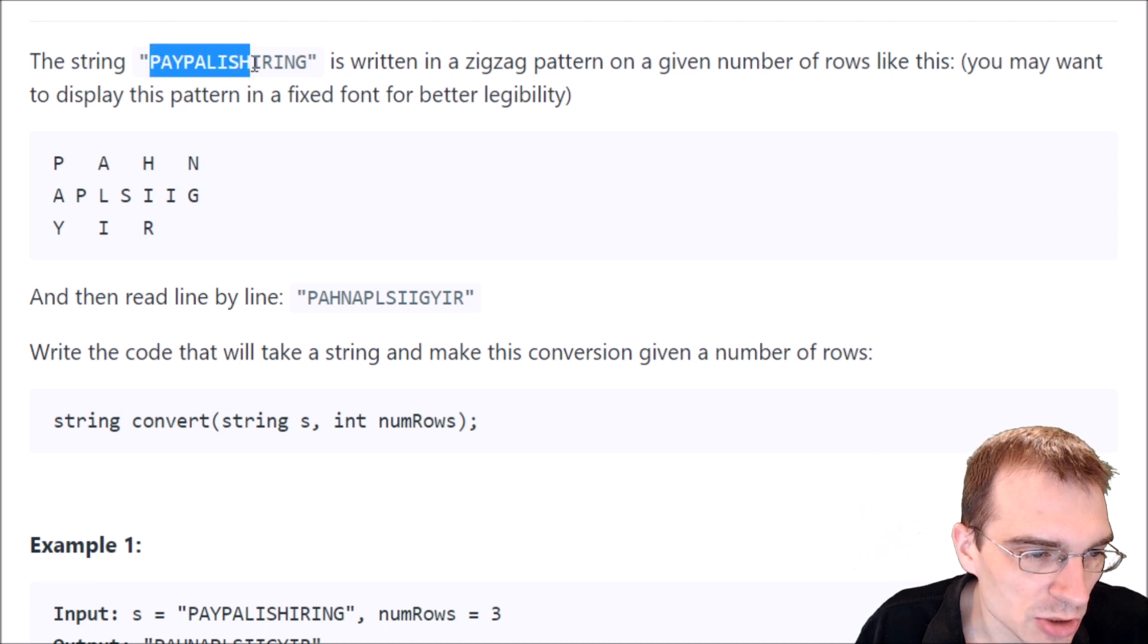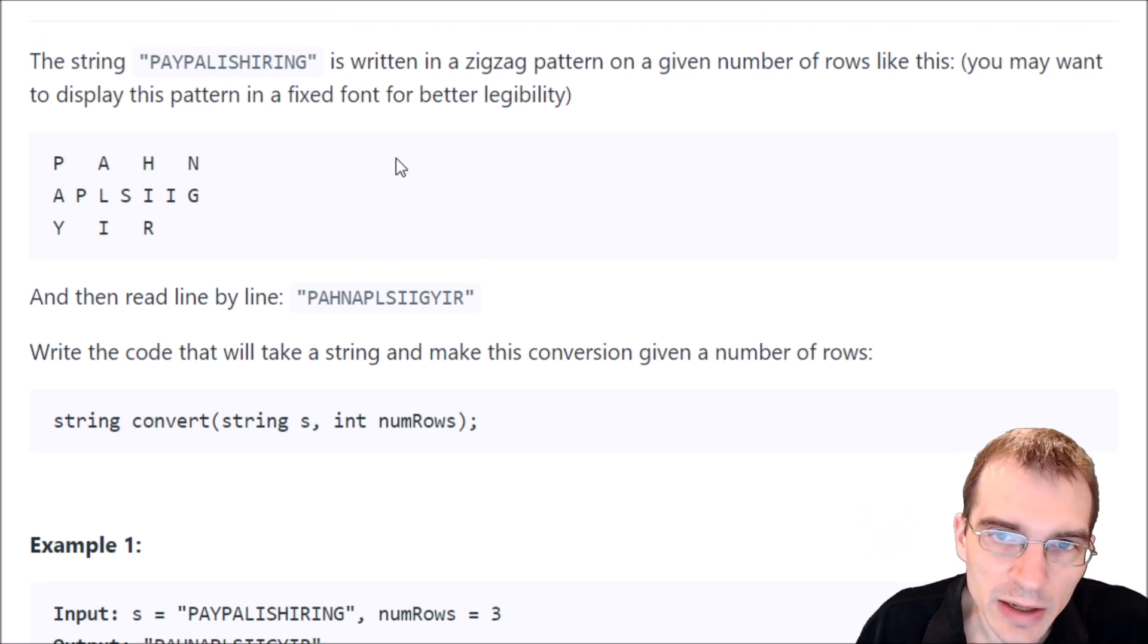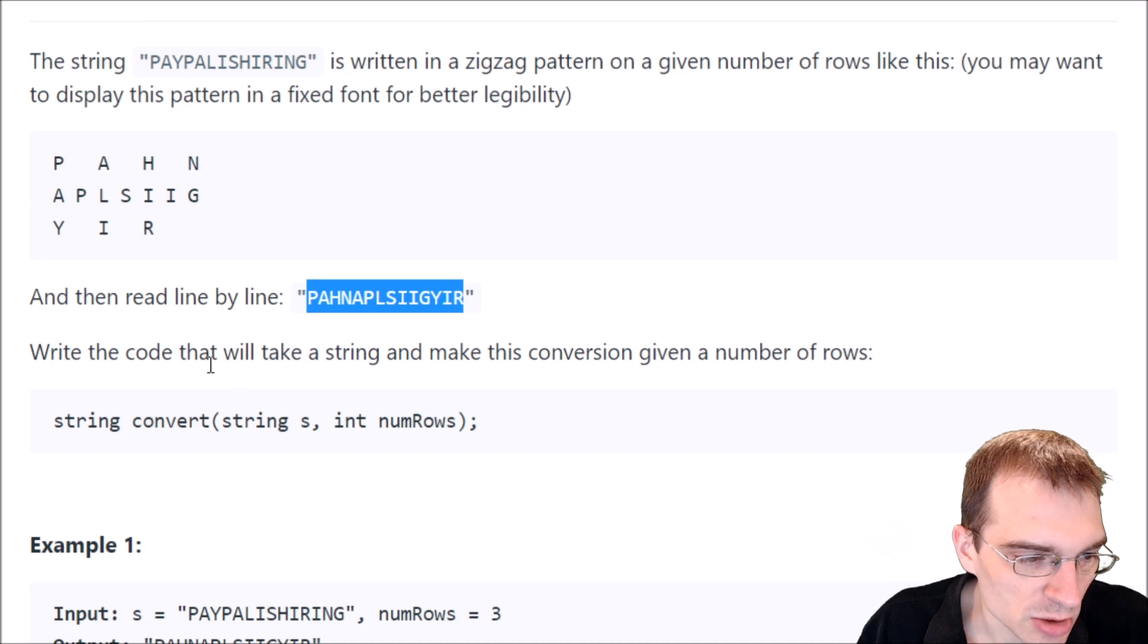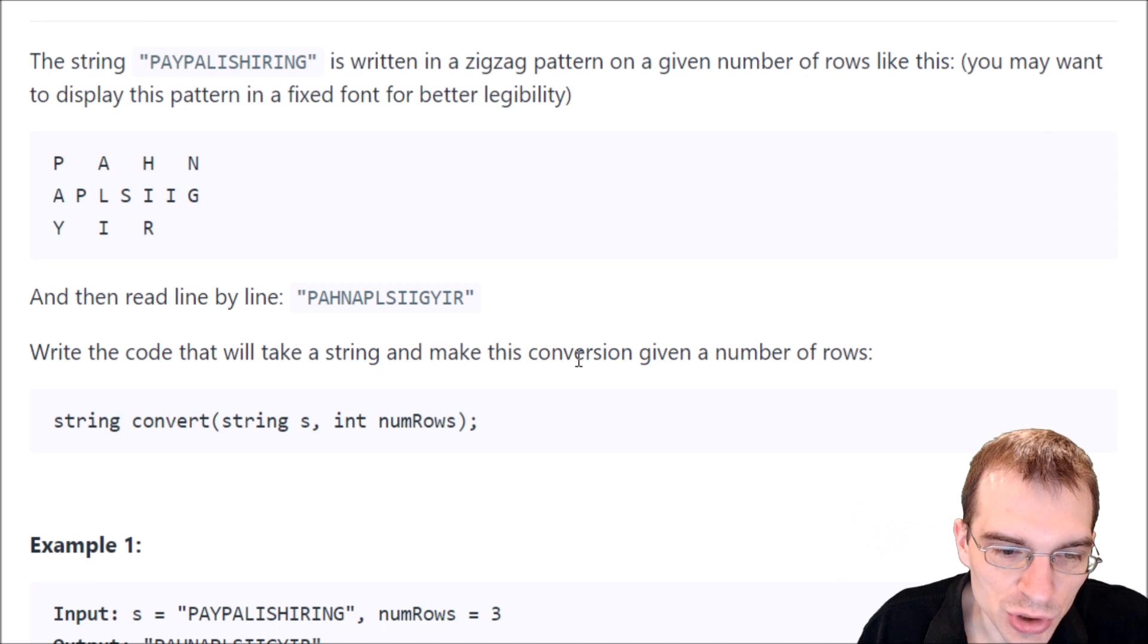The string PayPal is hiring is written in a zigzag pattern on a given number of rows. You may want to display this pattern in a fixed font for better legibility. It's showing us the string in this weird configuration where it goes PayPal is hiring up and down across several rows in a zigzag configuration. Then we're supposed to read line by line, reading it this way instead of doing the zigzag.